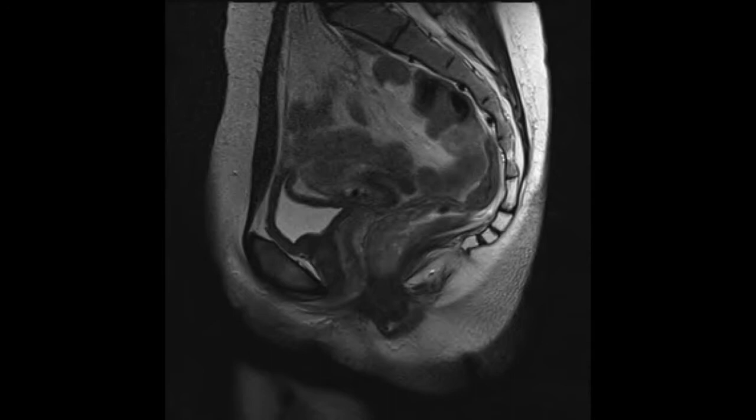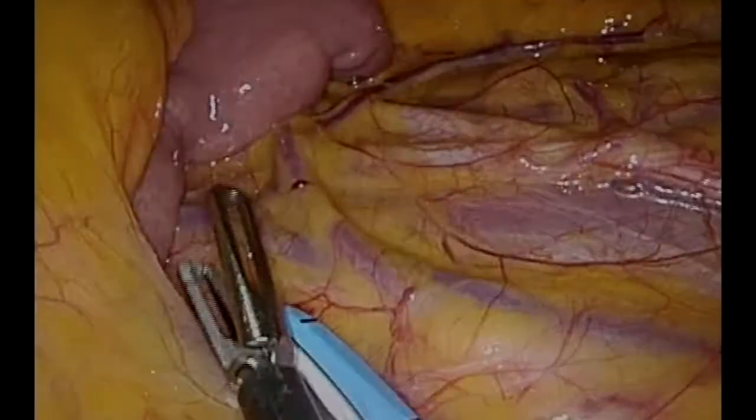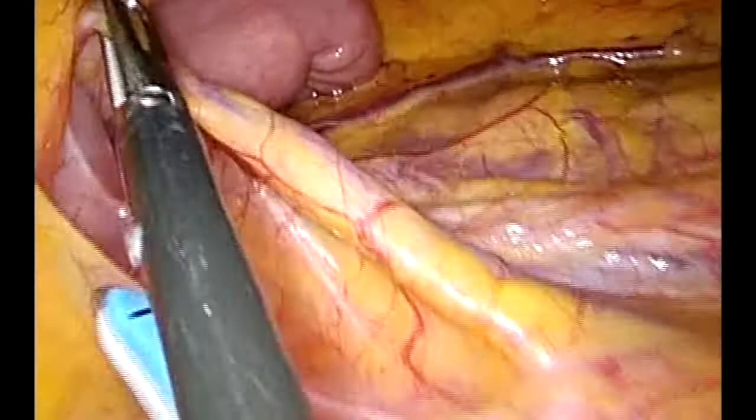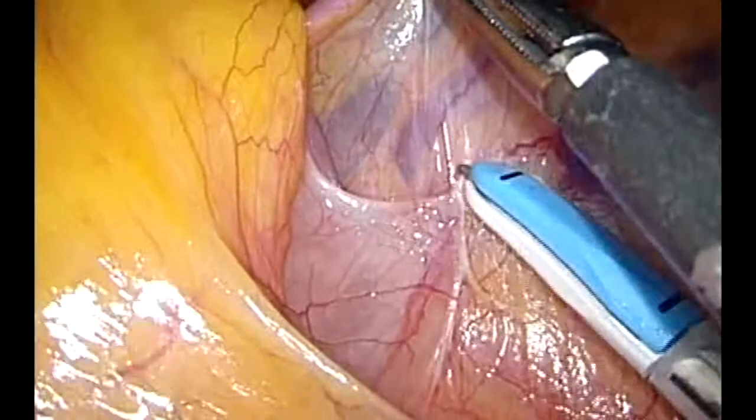Access was obtained by five laparoscopic ports as demonstrated. Medial to lateral dissection starts at the level of the inferior mesenteric vein, just distal to the duodenojejunal flexure.